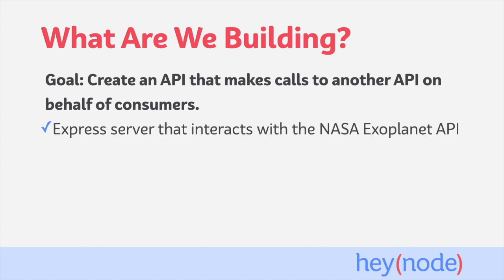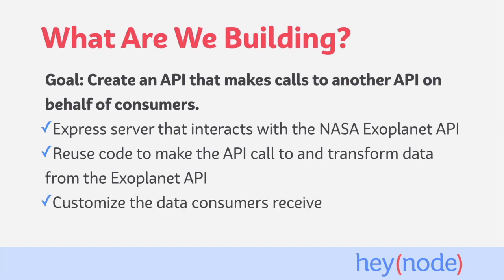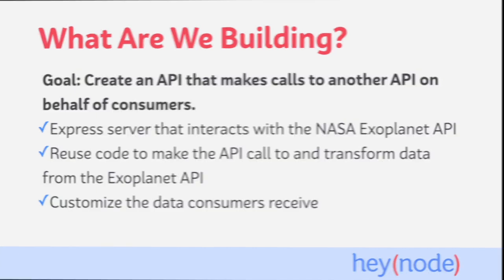To achieve that goal, we will be building an Express server that exposes a custom API that interacts with the NASA Exoplanet API. We previously worked with the NASA Exoplanet API in our tutorials about building an ETL pipeline, and we will be reusing code from those tutorials to make API calls and transform the planet records returned from the Exoplanet API. Our API proxy will return a subset of data that the Exoplanet API provides, allowing us to customize the data to the needs of the consumer.